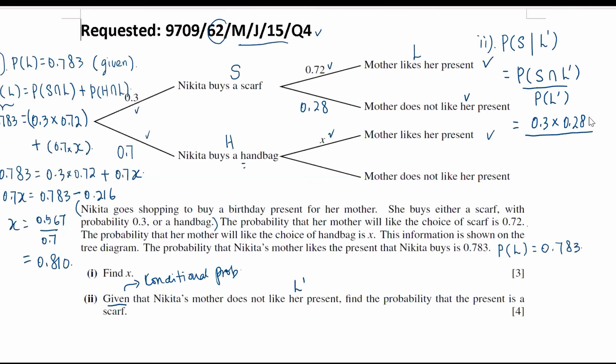From the beginning, given that the probability that her mother likes the present is 0.783, in order to find out the probability that her mother does not like it, we can take 1 minus the probability that her mother likes her present. In that way, we are getting the probability that her mother does not like her present. Do the calculations.